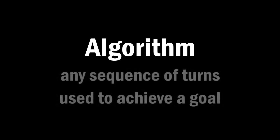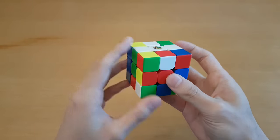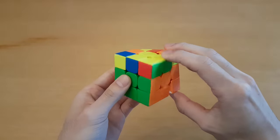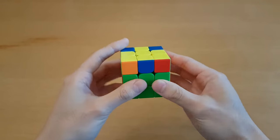On the Rubik's Cube, an algorithm is any sequence of turns used to achieve a goal. This could be something as simple as flipping a piece during the cross, or making the cross on the top face, to something as advanced as solving the entire last layer at once.